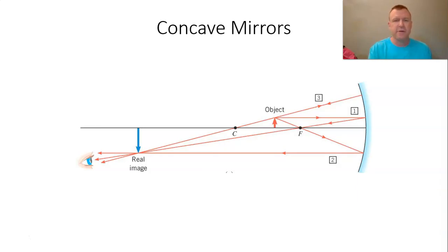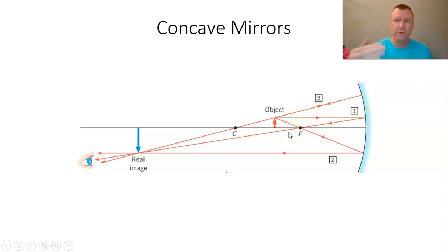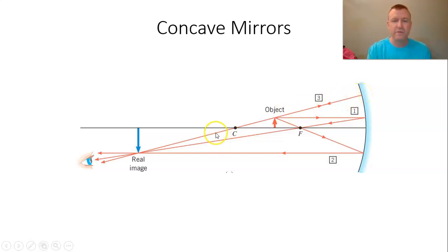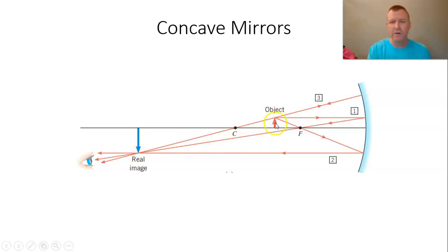To see an image in a concave mirror, here's an object with lots of light rays reflecting off in all directions, but we only look at three. One reflects parallel to the axis then through the focal point. One goes through the focal point and reflects back parallel to the axis. The third goes toward the center of curvature, hits at 90 degrees, and reflects back on itself. These three reflected rays converge to a single point — that's where the tip of our image is located, giving us an upside-down image.